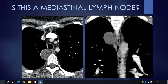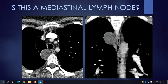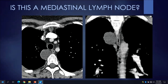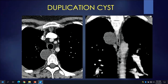Is this a mediastinal lymph node? We see a very well-circumscribed, roughly round-shaped structure with very low attenuation measuring in the Hounsfield units of water. In this particular case, we might mistake this for a mediastinal lymph node, but it actually represents a different type of mediastinal mass — in this young individual, it is a duplication cyst.